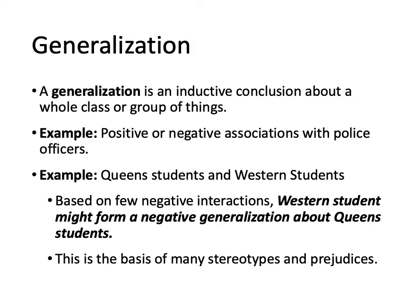At the heart of this is a generalization. The generalization is what you form when you make these observations — it's an inductive conclusion about a whole class or group of things. In a previous lecture, we talked about positive or negative associations with police officers. If you formed a concept of police officers based on positive experiences, you would likely have a positive generalization, so when you meet a police officer you would infer positive features. If you've had negative experiences, those would allow for a more negative generalization.